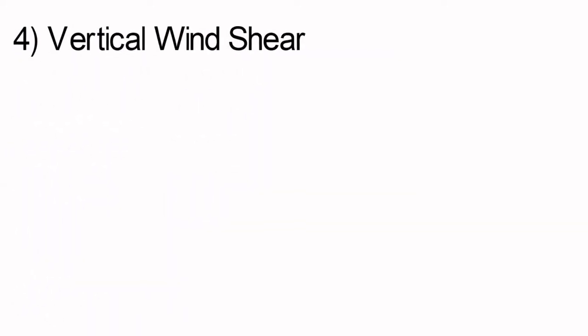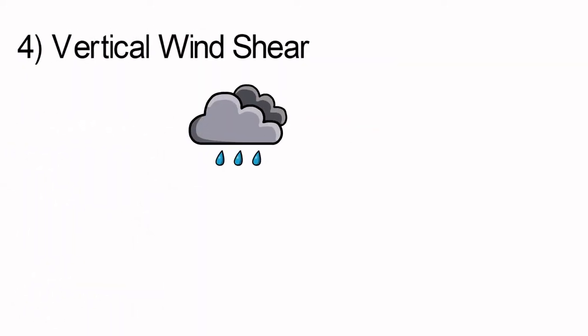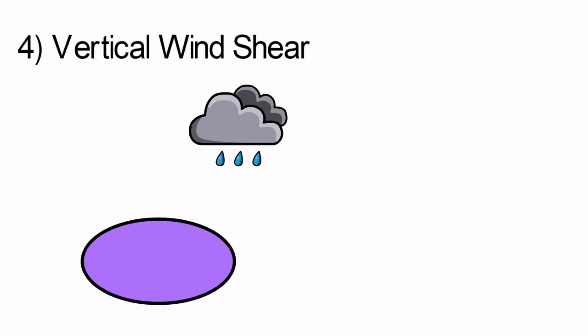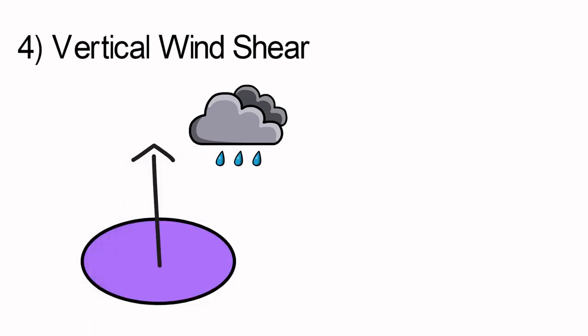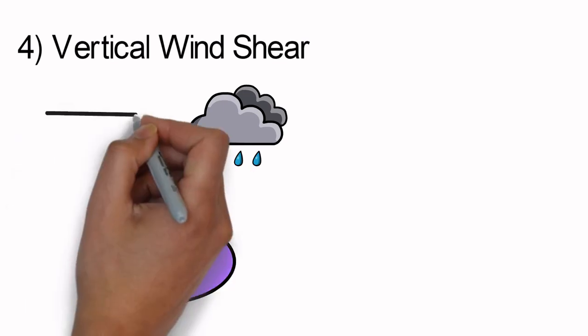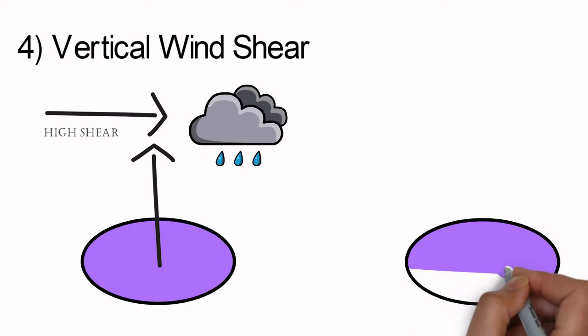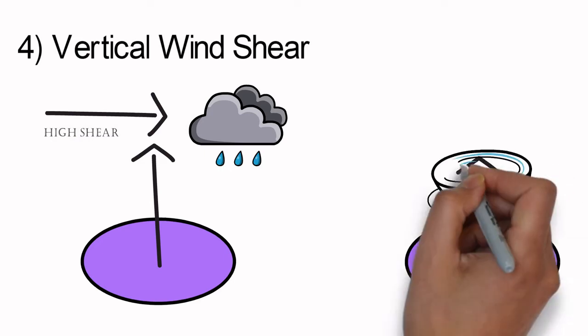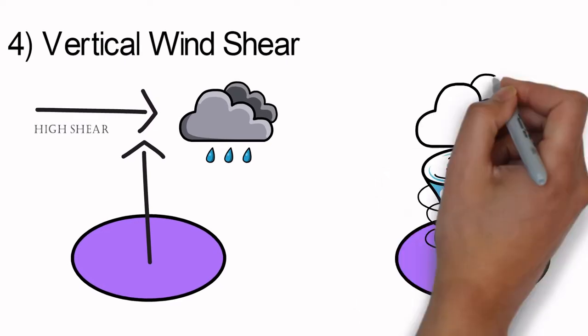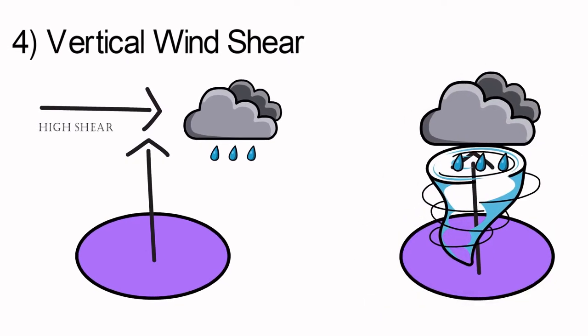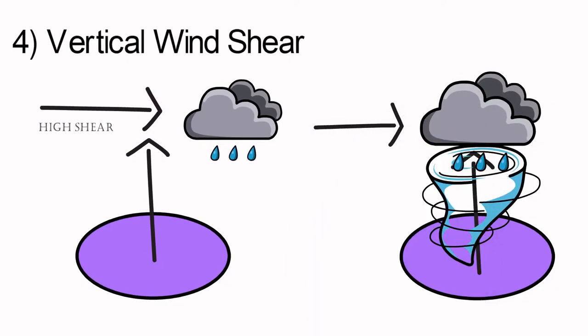The fourth factor is vertical wind shear. The winds which are converging at the surface and the winds which are diverging at the higher levels, the wind speed of both should be equal or less than that. If the diverging speed is more than the convergence, the clouds cannot form and they will disappear. They will be displaced, so the system cannot form.